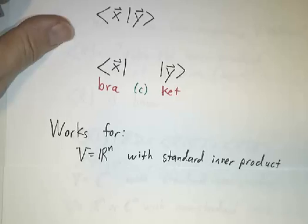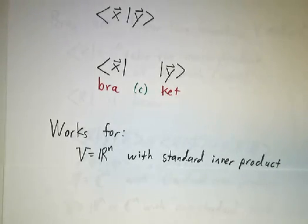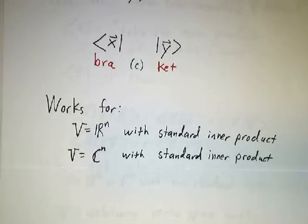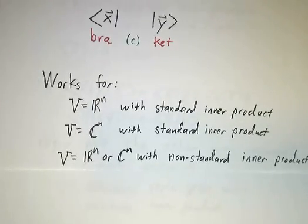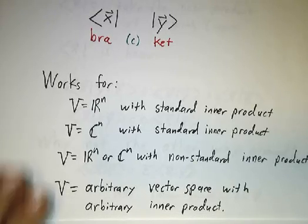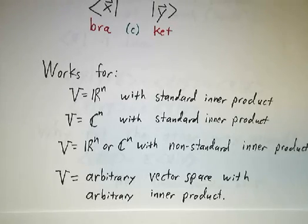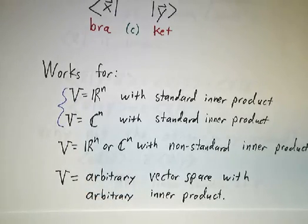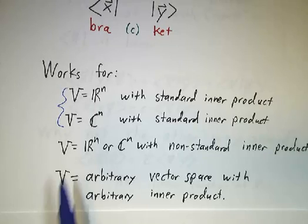This division works for Rn with a standard inner product, for Cn with a standard inner product, for Rn or Cn with non-standard inner products, and for arbitrary vector spaces with arbitrary inner products — in other words, it works in general. In this video, we're going to concentrate on Rn and Cn with standard inner products. In a subsequent video, we'll tackle the remaining cases.